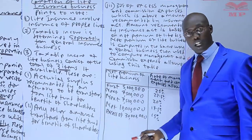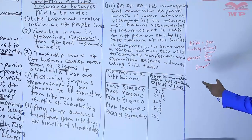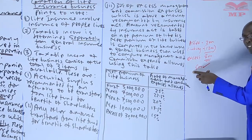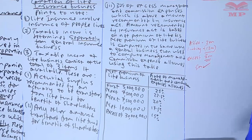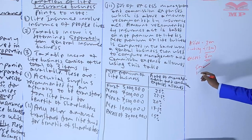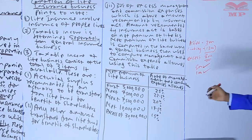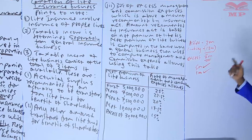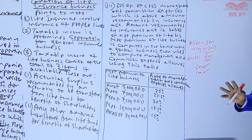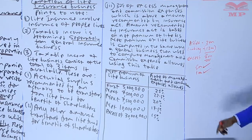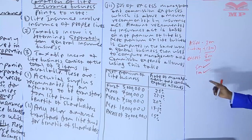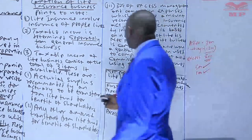For item two: the actuary may recommend 5 million to be transferred for shareholders out of the 8 million, but the directors of the insurance company may add an extra 1 million on top of that. Once that additional amount is recommended to be transferred, it also becomes taxable income. The actuarial surplus must be recommended — if it is not recommended, do not tax it.